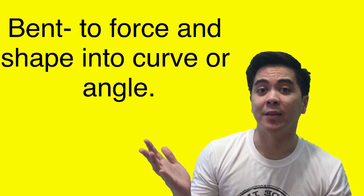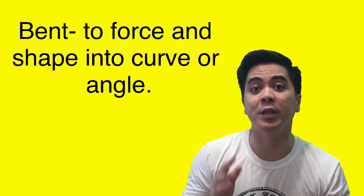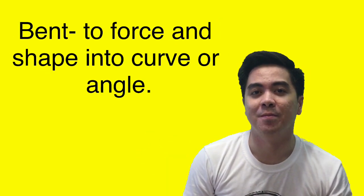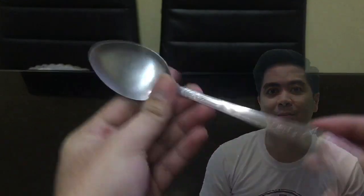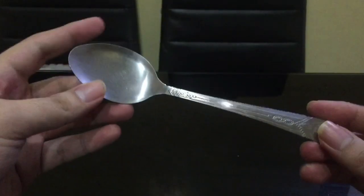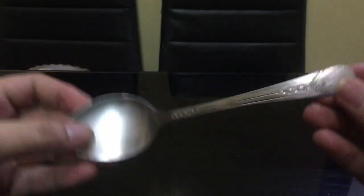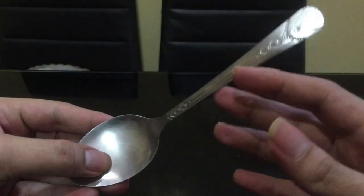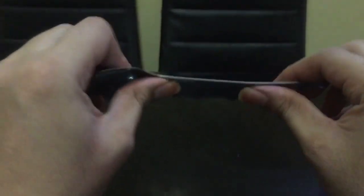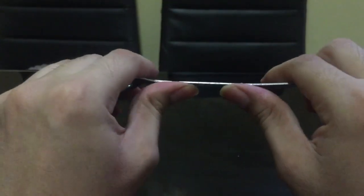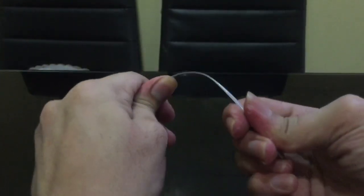First is bend. Bend is the shape or force into an angle or curve. One example for bend is a metal spoon. Kung ma-observe natin yung metal spoon, kapag binet natin, tingnan natin.